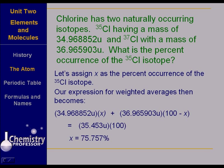I solved and found x is 75.757 percent, so it is 75.757 percent chlorine-35 and the rest, which is 24 point something percent chlorine-37. Do you get the idea?